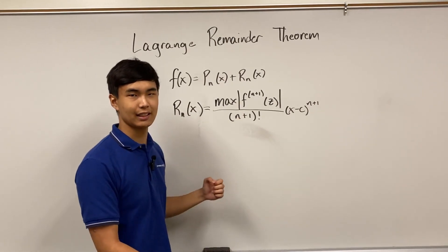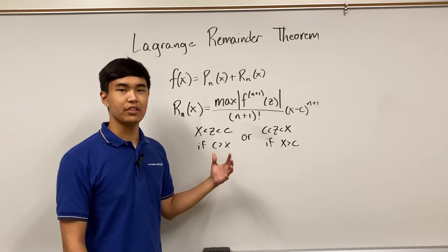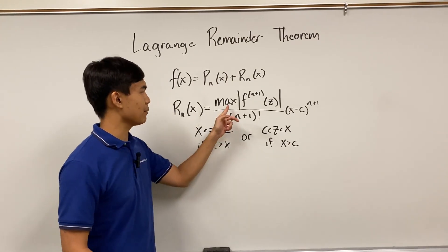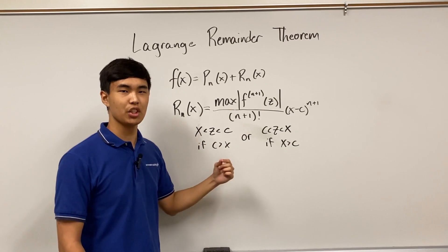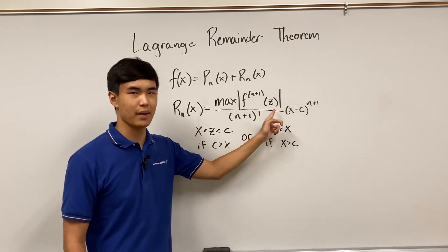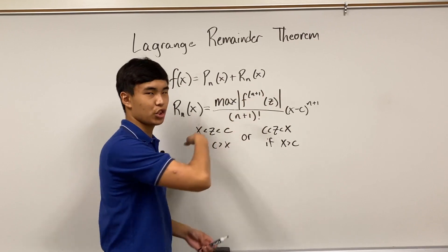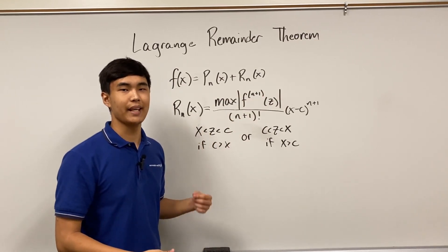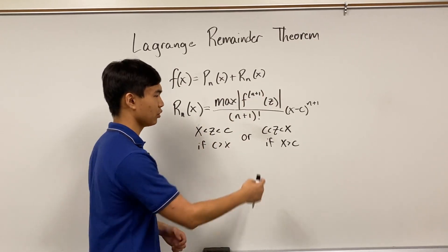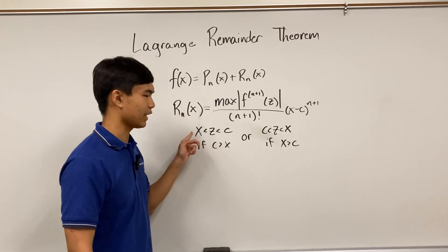Z is any value between x and c, like so. And again, the reason why this is is because we're trying to find the maximum possible change to the function that could have been made as we get from x to c. So this entire numerator just represents the maximum value of the n plus one derivative in the interval c to x, or x to c.